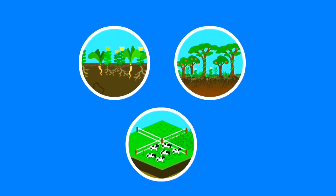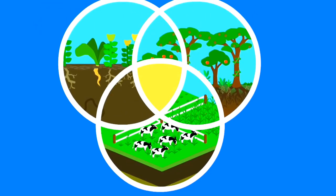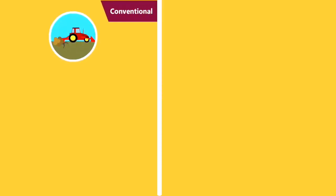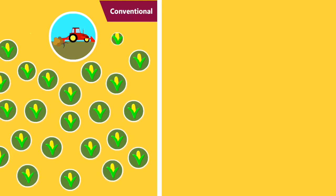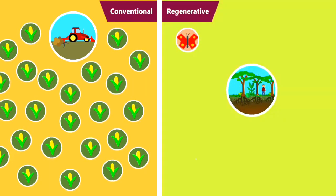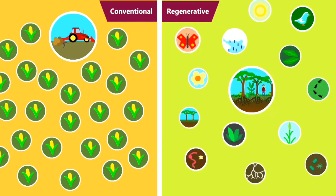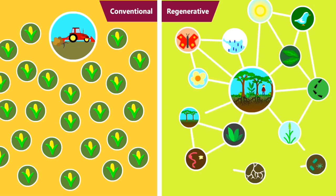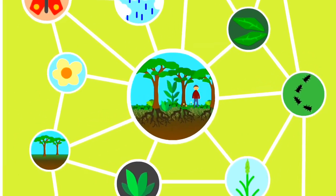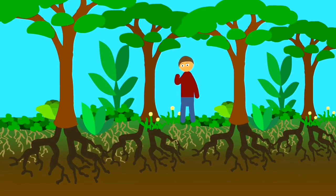These three examples of regenerative agriculture, plus all the rest of them, all have something in common. Whereas in conventional agriculture, you seek to create as many of one thing as possible, in regenerative agriculture, you seek to create as many relationships between things as possible. You are one of those things. What sort of relationship with the land do you want to foster?